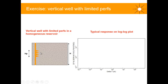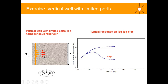Intuitively, near the wellbore at small delta T, you'd expect a radial flow regime across the open vertical section — the limited perforation height HP. Radial flow is circular flow in the horizontal plane towards the vertical section, developed only across HP. So this early radial flow stabilization is not indicative of KH but of KHP.